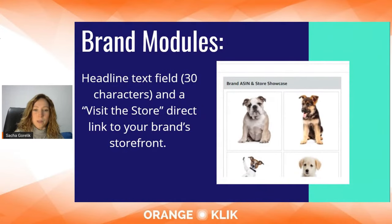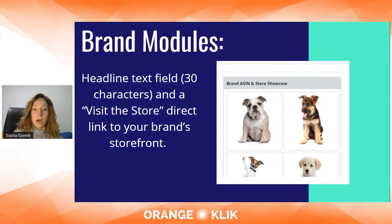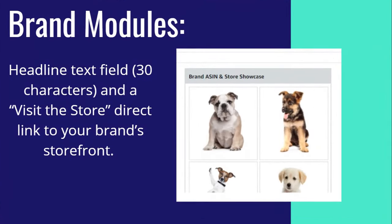Then we have the brand modules. You can put in different products here, and it links to your storefront or to the actual product. You have headline text — 30 characters — and then a "visit the store" button. This is really interesting because if people are on your product listings page, they can be taken straight to your storefront, which gets them away from all the competitors that usually show up underneath your actual product listing.